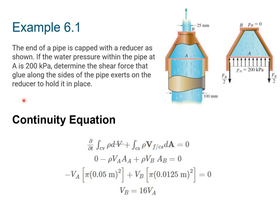So again, the best way to learn how to apply these is through examples. And so here, let's take a look at example 6.1. So we have the end of a pipe is capped with a reducer as shown in the figure. If the water pressure within the pipe at A is 200 kilopascals, we want to determine the shear force that the glue along the sides of the pipe exerts on the reducer to hold it in place. So here's a picture of the reducer. You can see the diameter at the base is 100 millimeters, and at the top is 25 millimeters. We have our control volume defined to be shown.